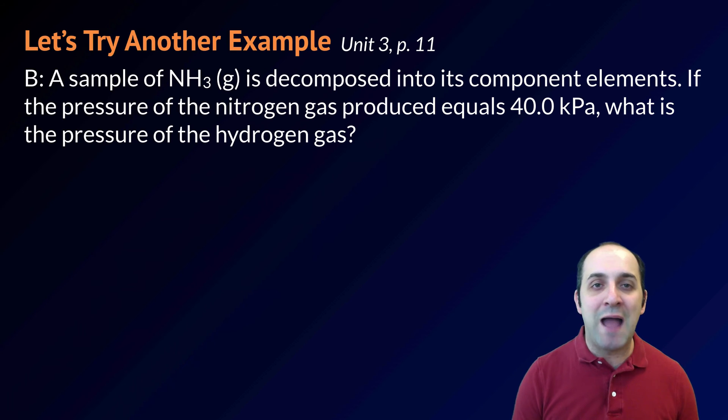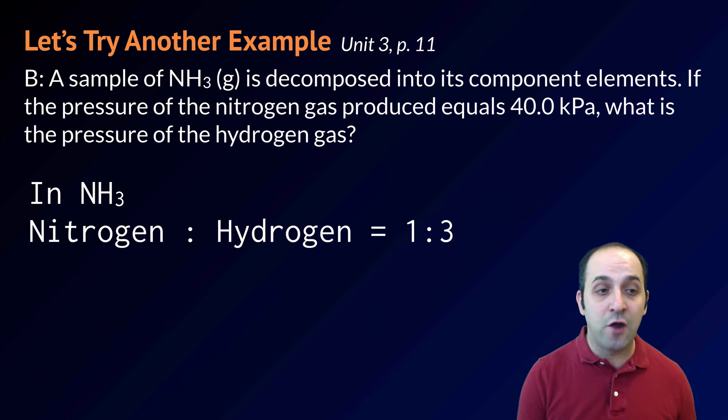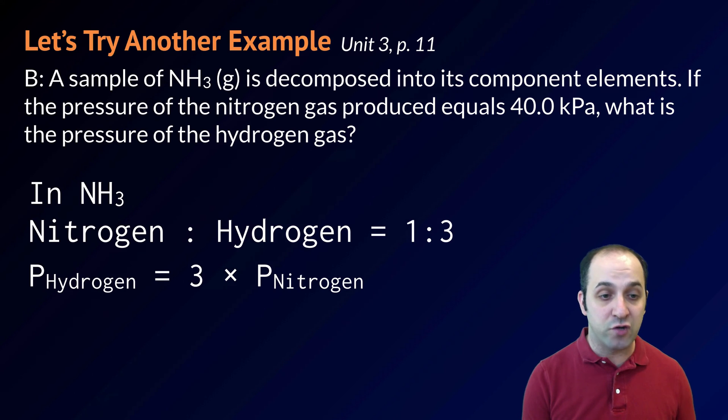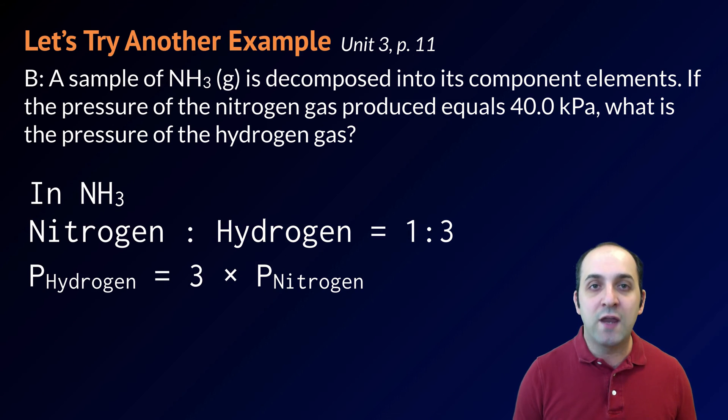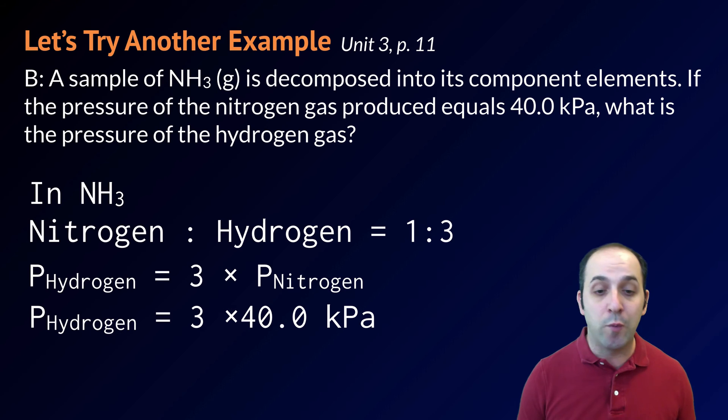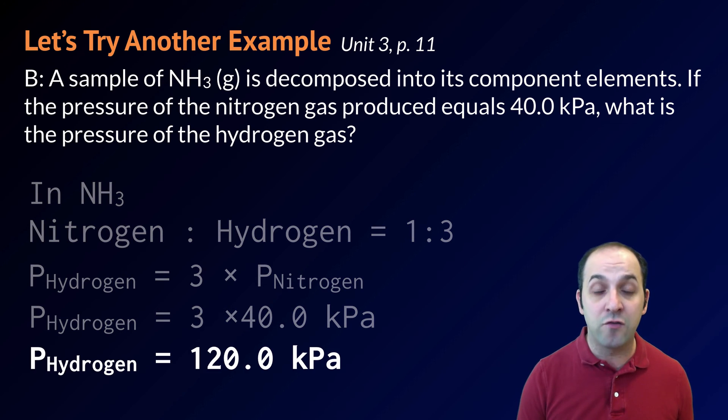In order to solve this, we need to think back to Avogadro's hypothesis and understand that in ammonia, the relationship of nitrogen to hydrogen is a one to three relationship. If that's the case, when we decompose this substance, we're going to have three times as much hydrogen as we do nitrogen. By using that understanding, we can then multiply the pressure of the nitrogen that's given to us in the problem by three in order to figure out the pressure of the hydrogen, which will wind up being three times 40 kilopascals or 120 kilopascals as the expected pressure of the hydrogen gas.